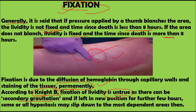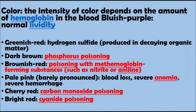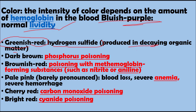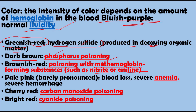Different color changes of lividity are seen in different types of poisoning. Normal lividity is bluish-purple. Greenish-red lividity is seen in hydrogen sulfide poisoning, such as from decaying organic matter, and also in putrefaction. Dark brown discoloration is due to phosphorous poisoning. Brownish-red lividity is seen in methemoglobinemia, caused by nitrite, aniline dye, or various aromatic dye poisoning.